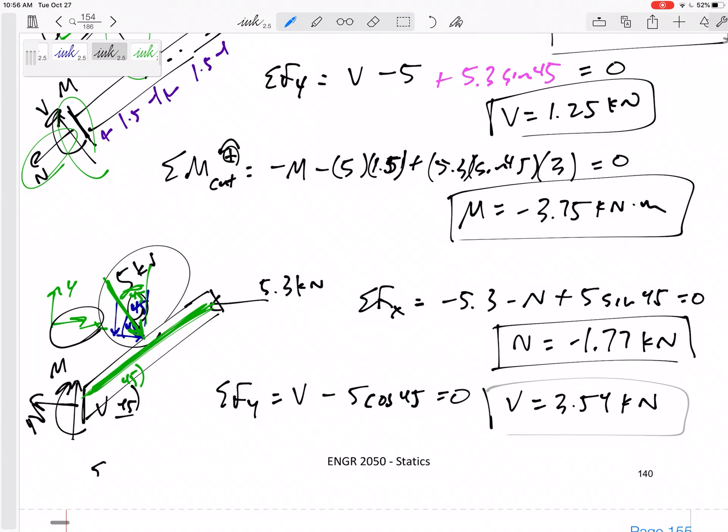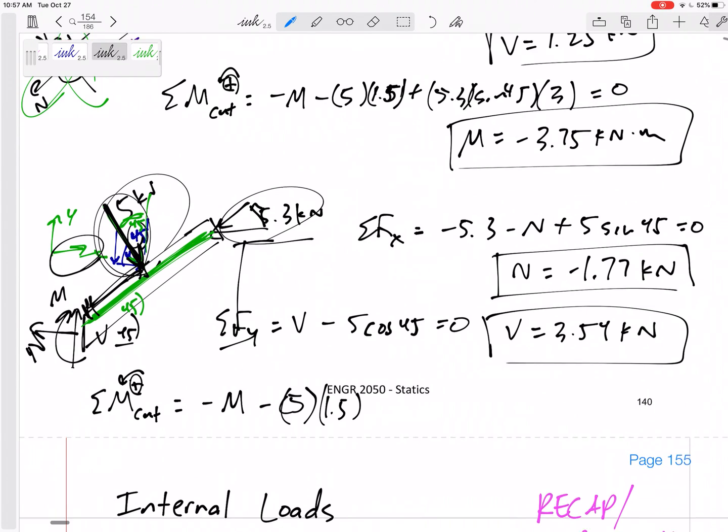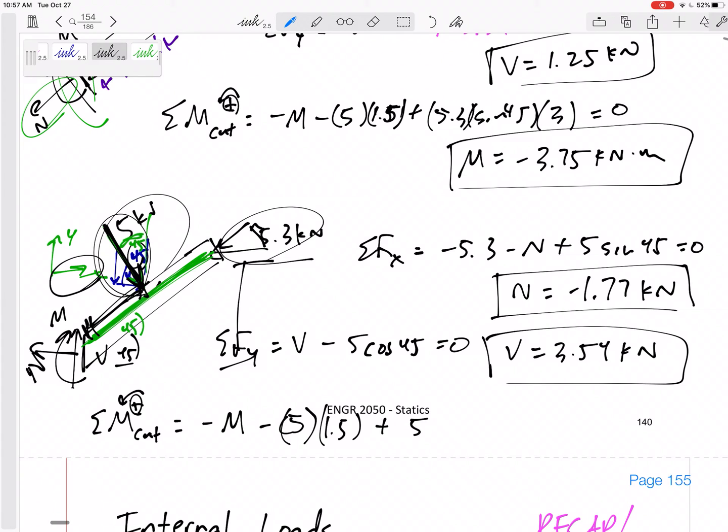All right and then summing the forces in the y direction V and then minus 5 cosine 45 equals 0 so V would be 3.54 kilonewtons. Different. And then summing the moments I like sum moments about the cut V goes straight through it and goes straight through it but I've got that M. I'm going to choose positive counterclockwise negative M so I've still got this 5 that was 1.5 away right don't overcomplicate this. It's perpendicular distance is this 1.5 creating a negative moment.